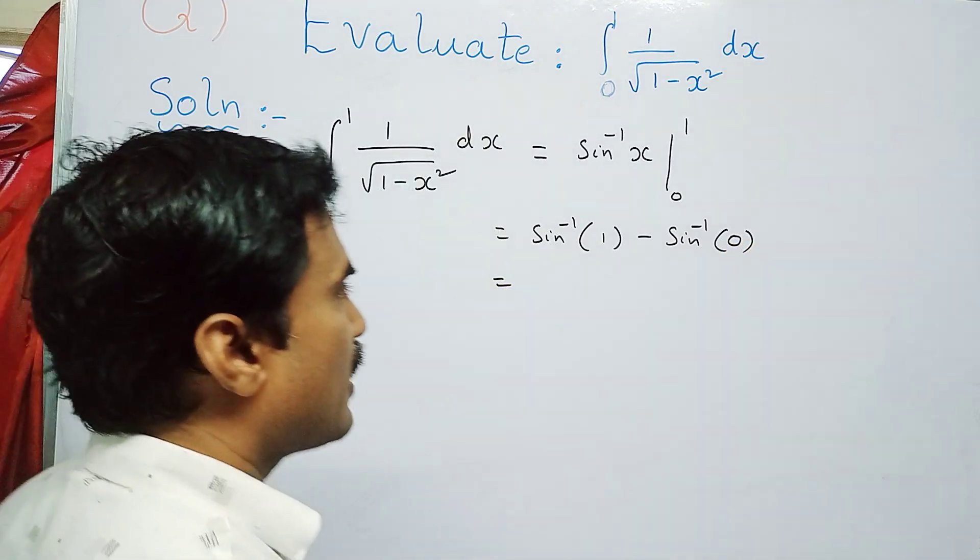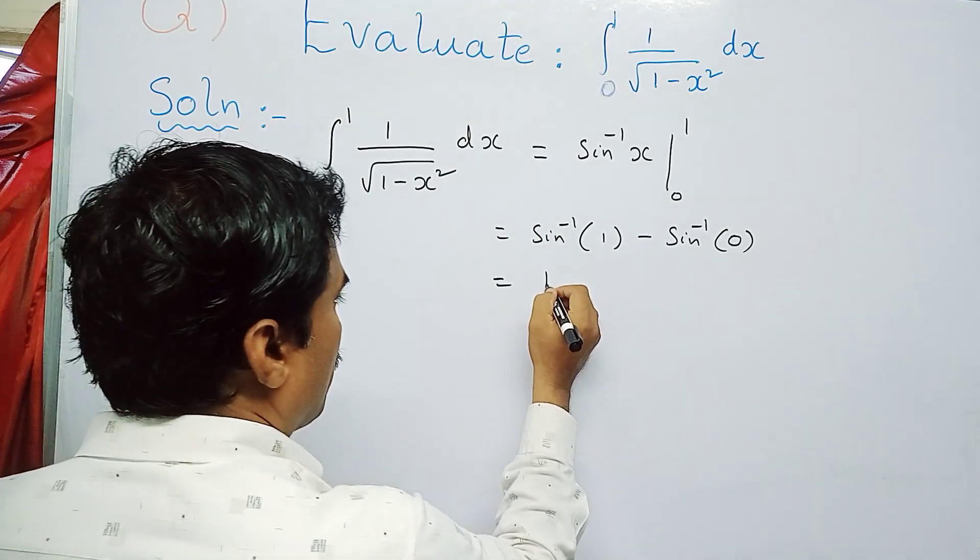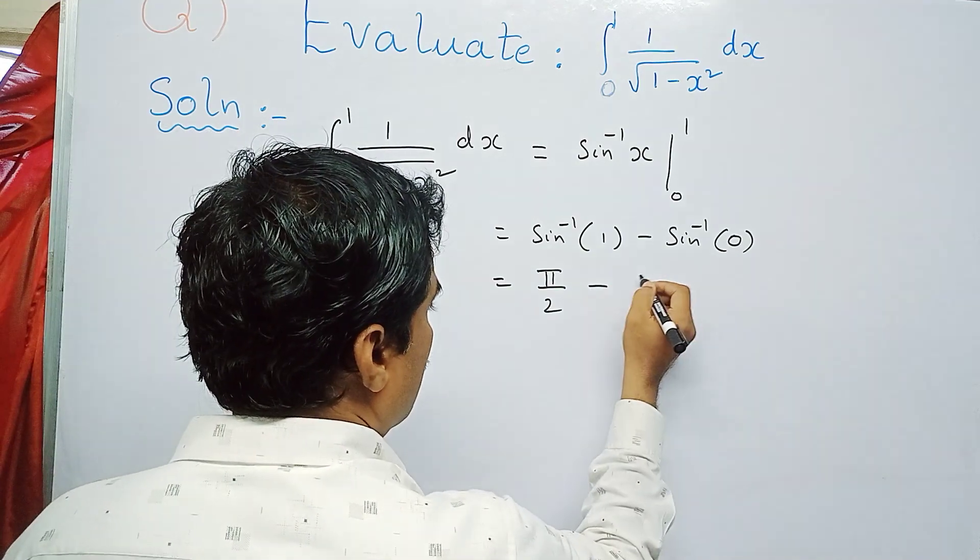Sine inverse of 1: when will sine theta become 1? That is at 90 degrees. That means you can write this as pi by 2, because pi is 180, 180 by 2 means 90. Sine inverse of 0 is 0.